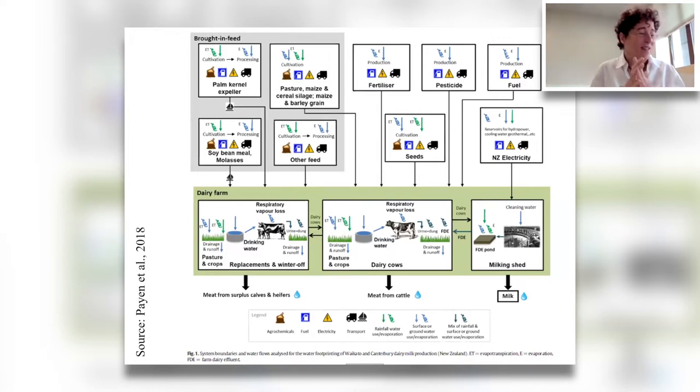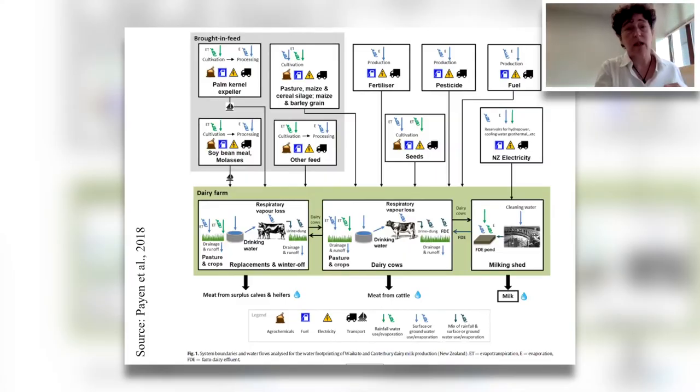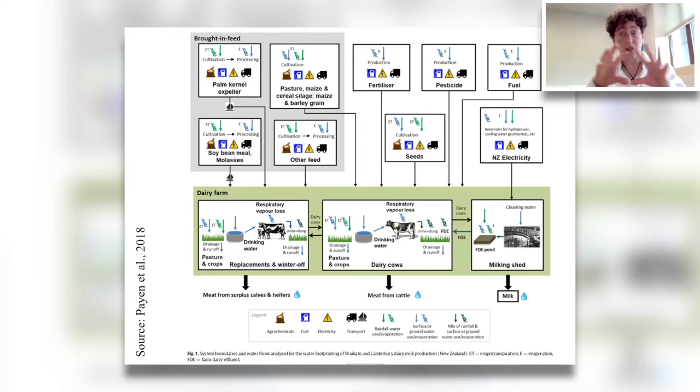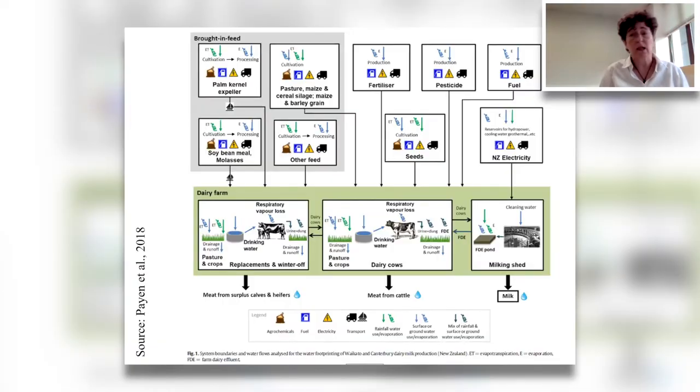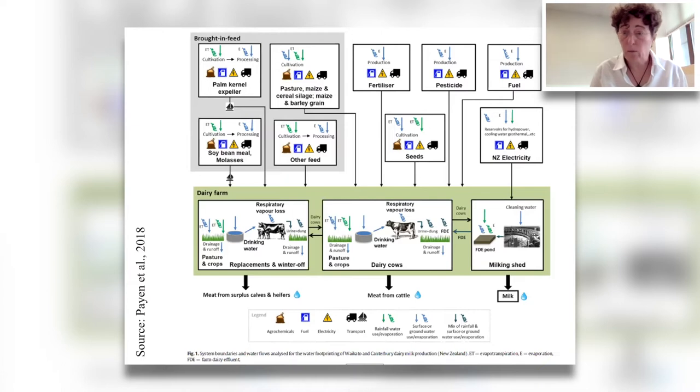The life cycle perspective means looking from cradle to grave at products. For milk, we've got milk coming out at the bottom right of this diagram, but we are accounting for water use all the way back up the supply chain — the brought-in feed, production of fertilizers, pesticides, fuel, etc., as well as the cows grazing in New Zealand largely on outdoor pasture. When we do water footprinting, we look at all of those activities and their water use relative to the functional unit — for this study, one kilogram of fat and protein corrected milk.